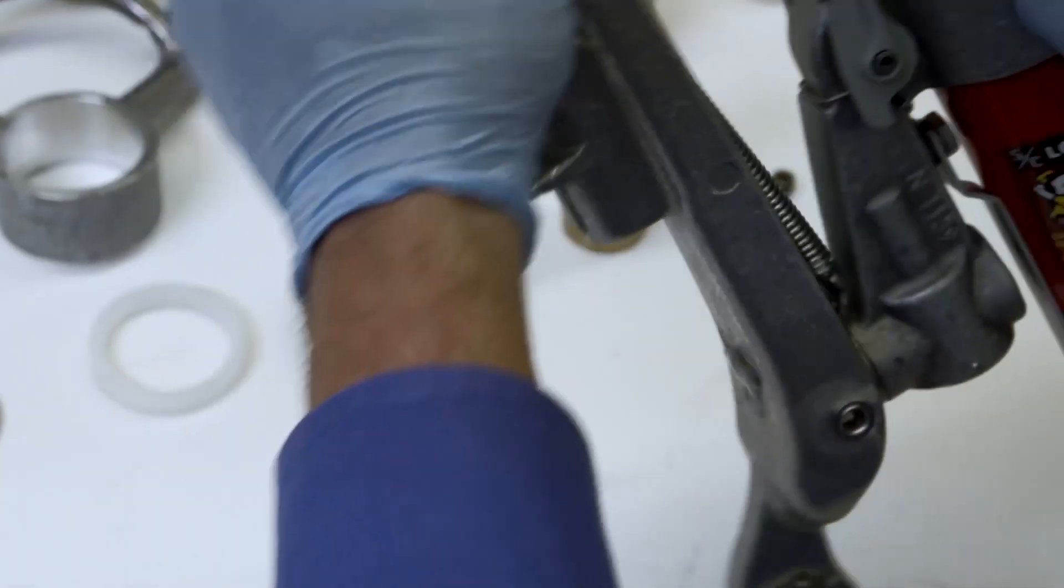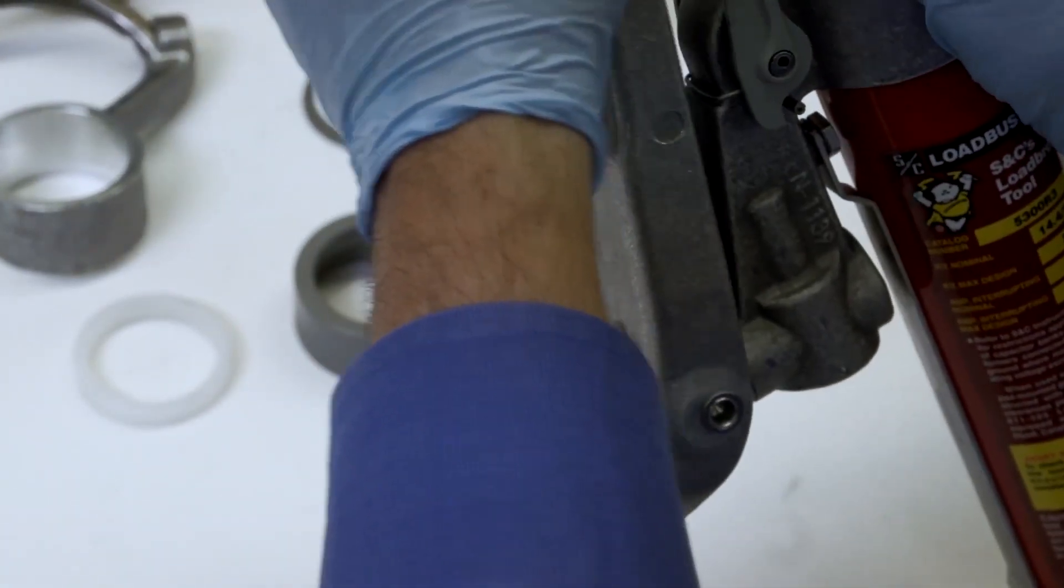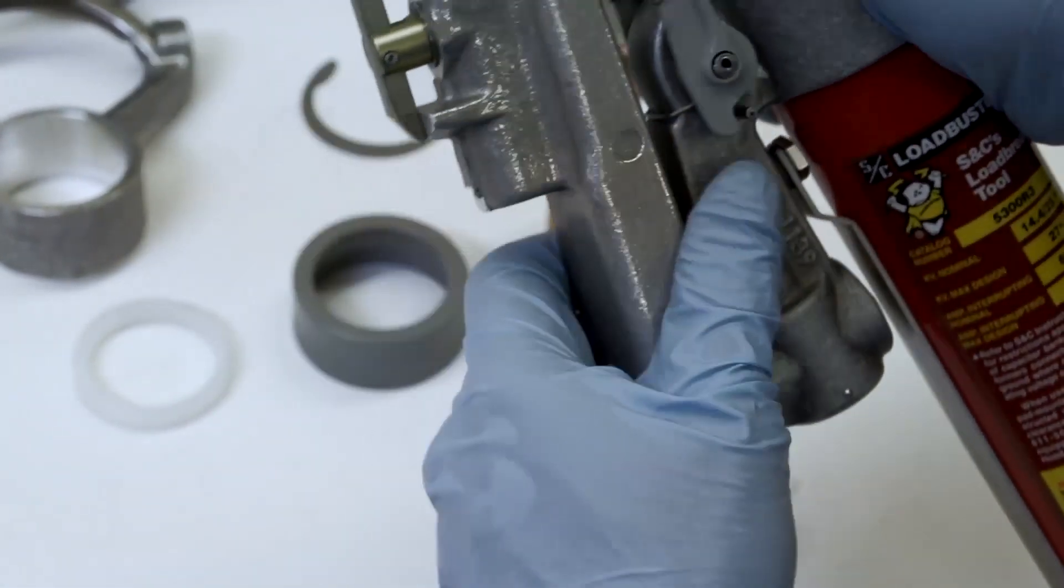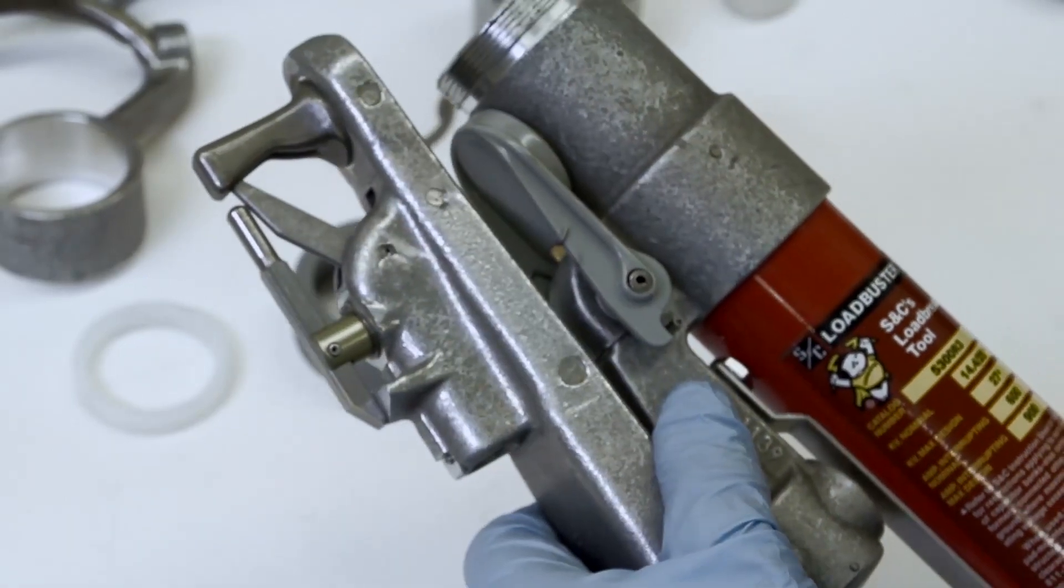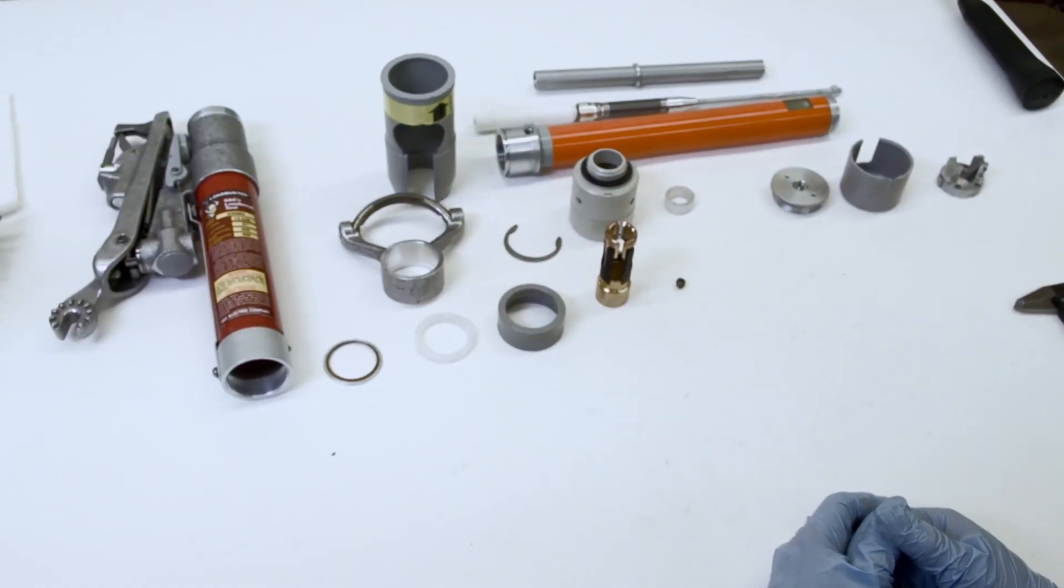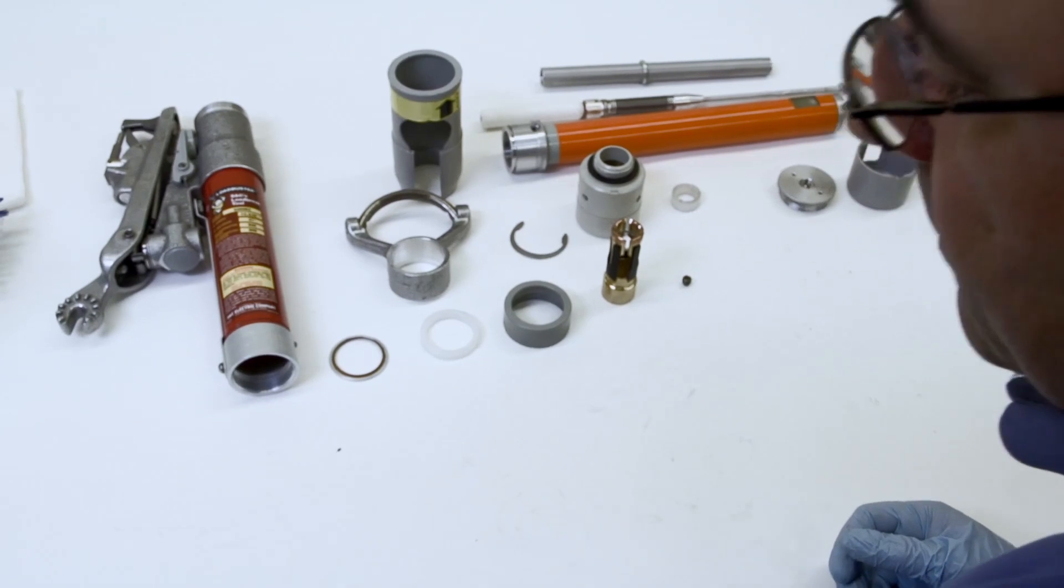This is a critical joint. If the hook frame assembly does not rotate freely, it may be necessary to replace the chassis. Contact your nearest S&C sales office for more information.